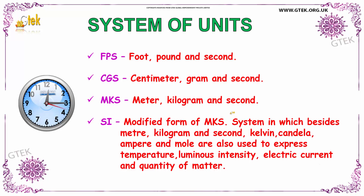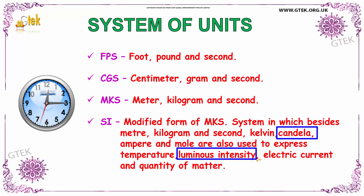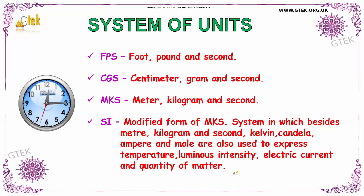SI units is a modified form of MKS — meter, kilogram, and second. In addition, it also includes Kelvin, candela, ampere, and more. It is used to express temperature, luminous intensity, electric current, and quantity of matter. So Kelvin is used to define temperature, candela is used to define luminous intensity, ampere is used to measure electric current, and mole for quantity of matter.